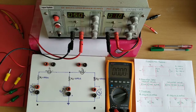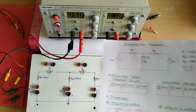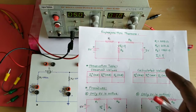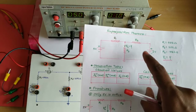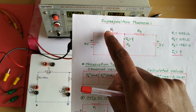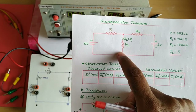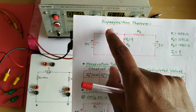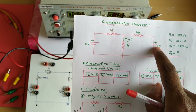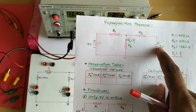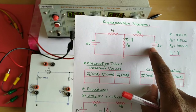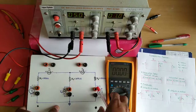Hello friends and welcome back. Today we are performing an experiment on the superposition theorem. The superposition theorem can be applied to any linear network when there are more than one energy source. For today's experiment, we are considering a T-type network using three resistors — R1, R2, and R3 — and two voltage sources. The theorem requires at least two energy sources.